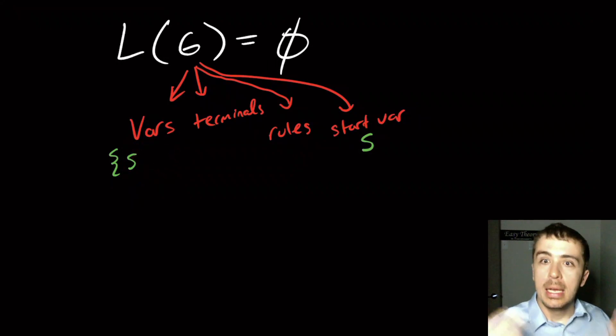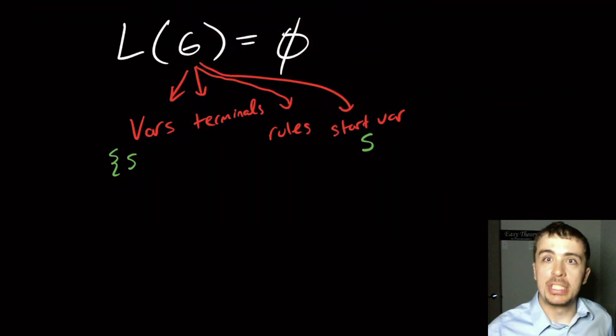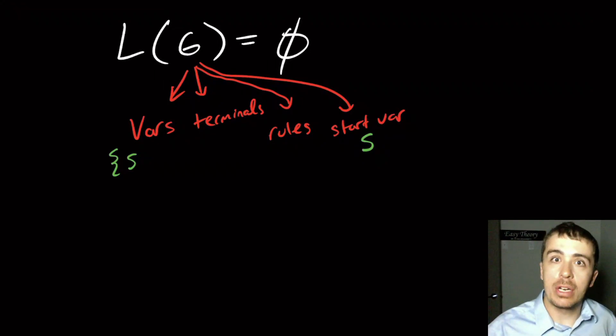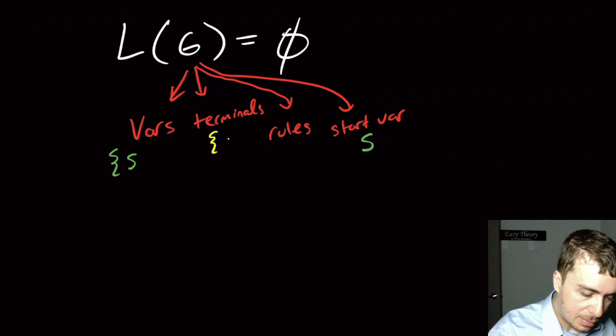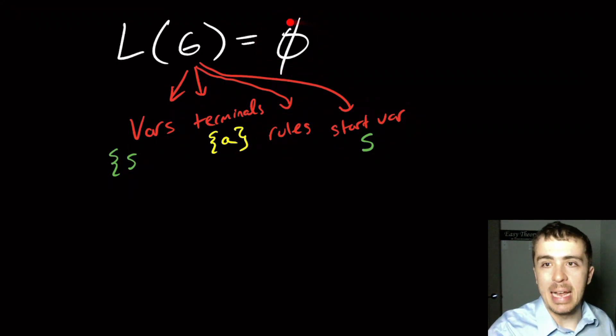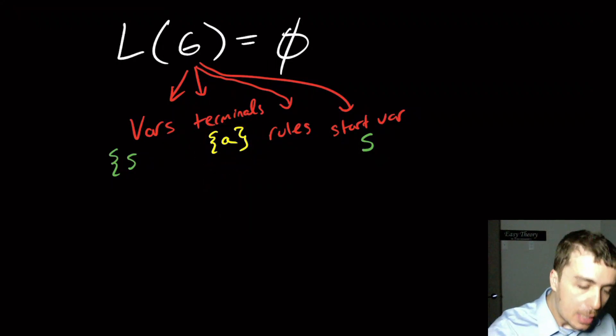For terminals, it really depends on the definition. Some textbooks say that you must have a terminal at least, but in some other context, the terminals may or may not be there. You could have an empty set of terminals. Let's assume that you must have a terminal in the terminal set. So let's call it A, and maybe let's just restrict it to one terminal. Since we want to not generate any strings of terminals at all, we want to keep this set as small as possible, but it actually won't matter in the end.